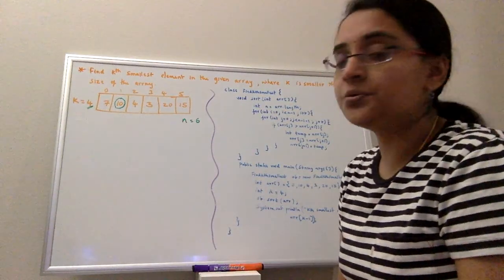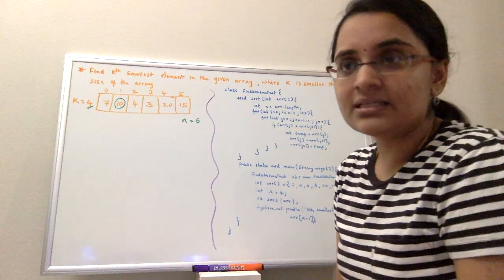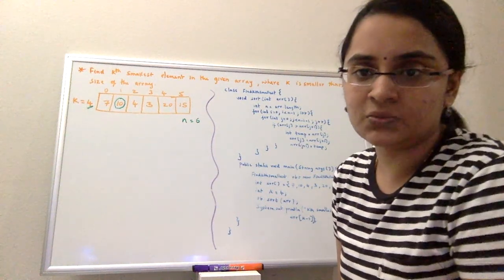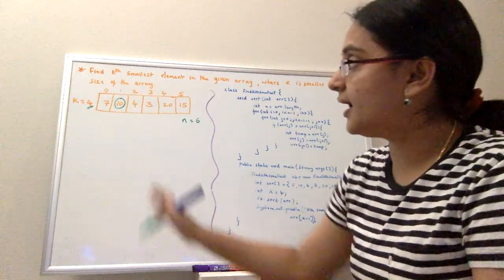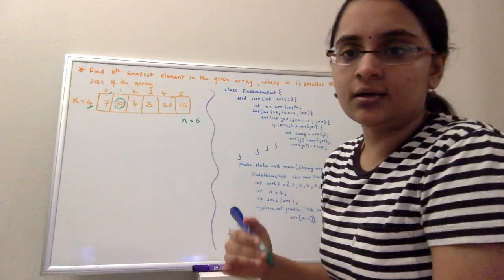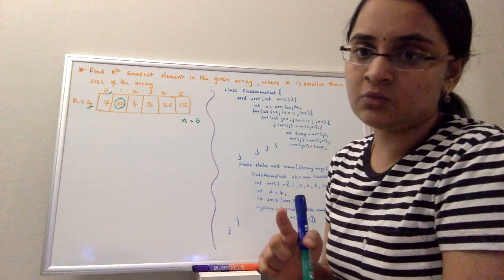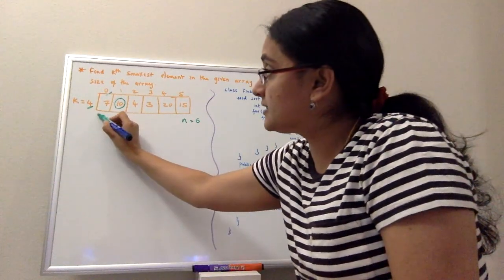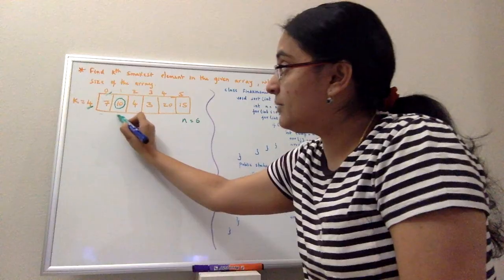So how to do this programmatically? Basically you sort it and then return the kth minus 1 element because the array starts with index 0. So if you want the first smallest element it will be in index 0. If you want the second, it will be index 1.